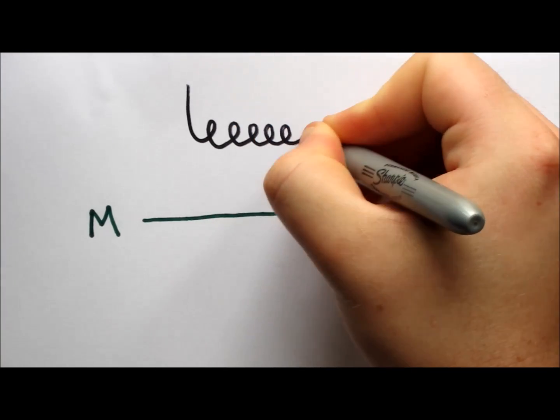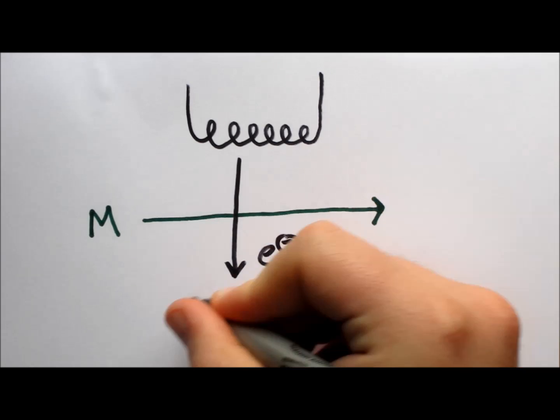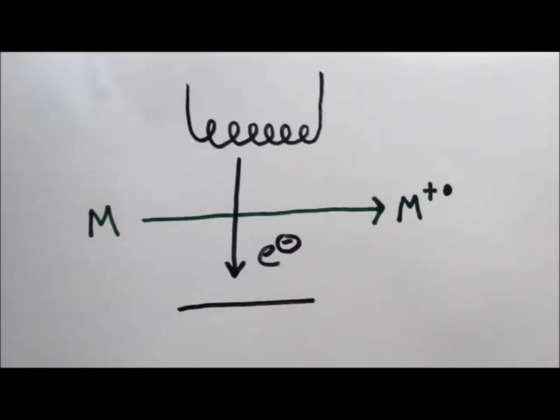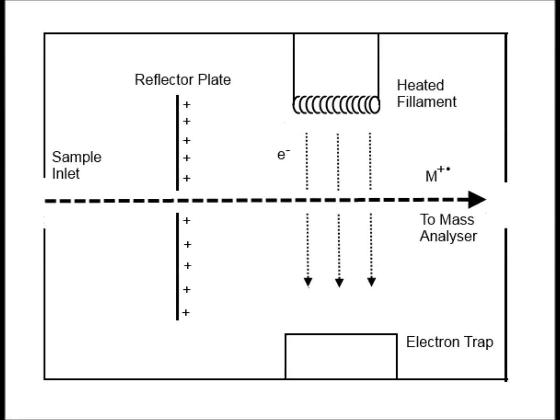In a mass spectrometer, this is done by heating a filament wire parallel to a positively charged plate. Electrons are ejected from the heated wire and attracted towards this plate. A stream of the sample is channeled perpendicular to this electron flow, ionizing the molecules as they pass through. This can be seen here in a schematic diagram.